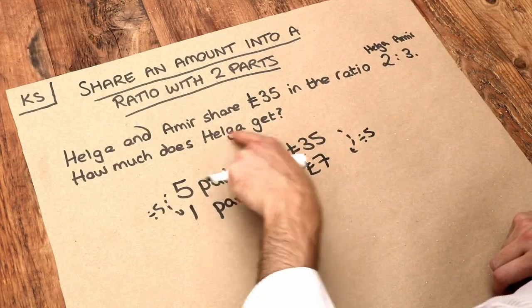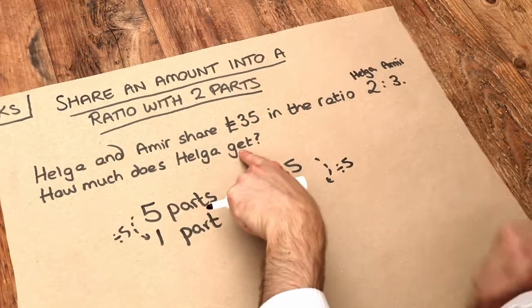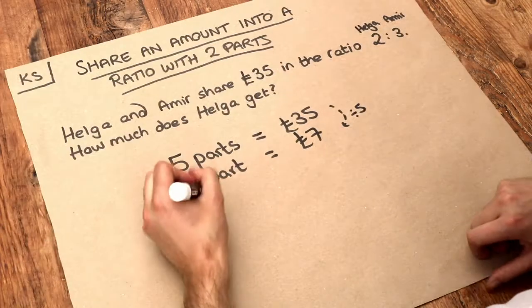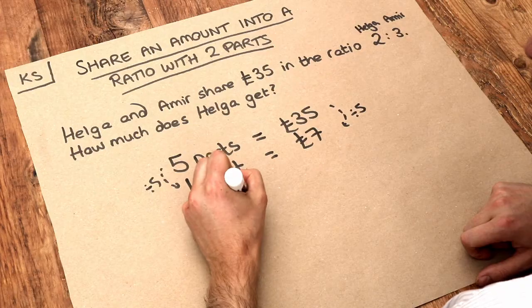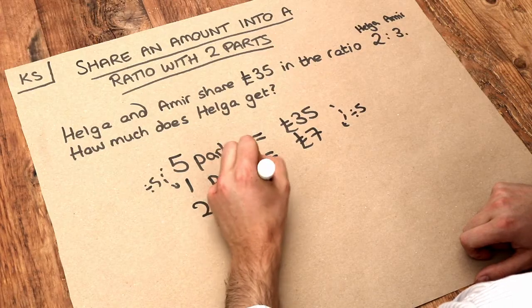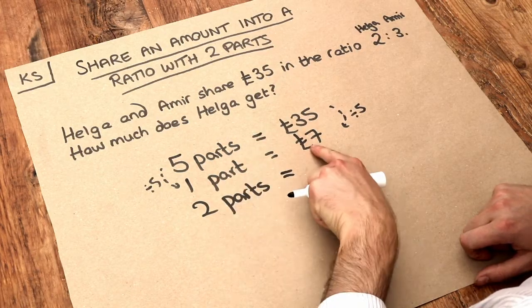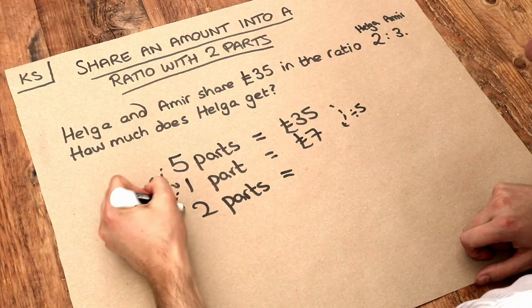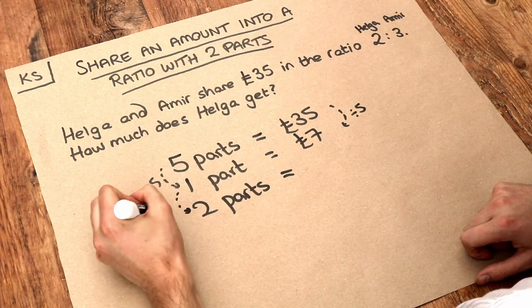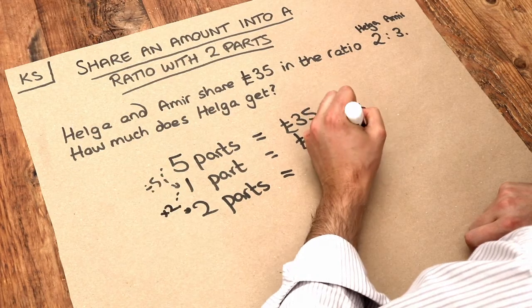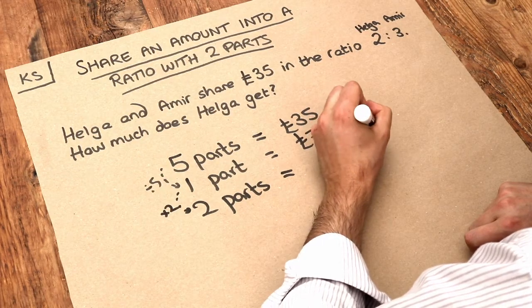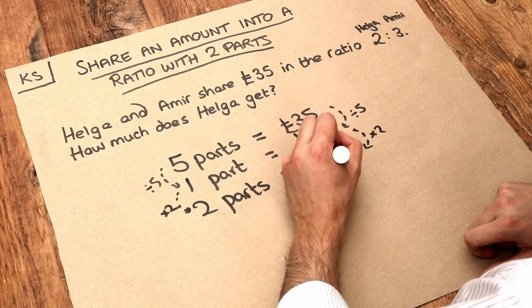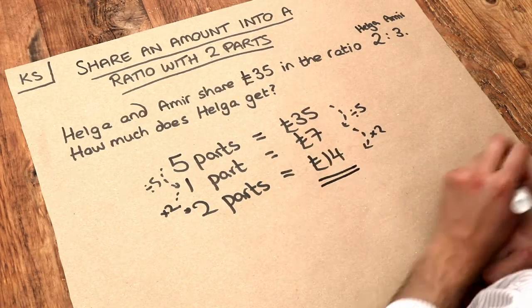We want to know how much Helga gets. Helga gets two parts in the ratio. So if one part is worth £7, two parts is two times as much. So if we do two times as much, that means Helga gets £14. And that is the final answer.